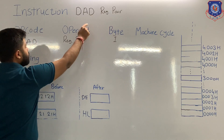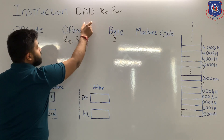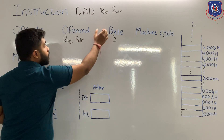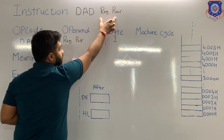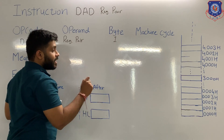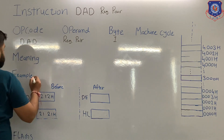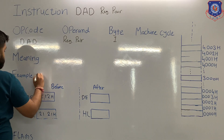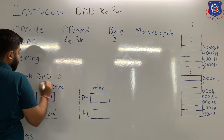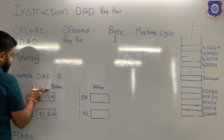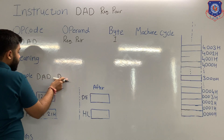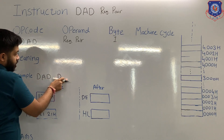DAD register pair means 16-bit addition of register pair and HL pair, and the answer will be stored in the HL pair. For example, DAD D means 16-bit addition of DE pair with HL pair.